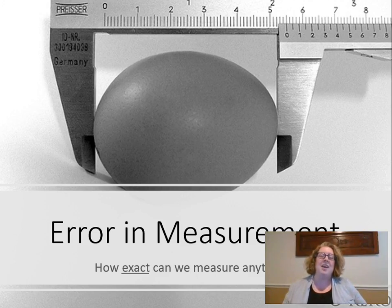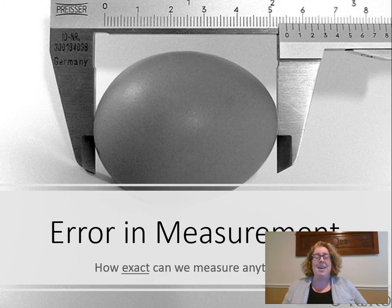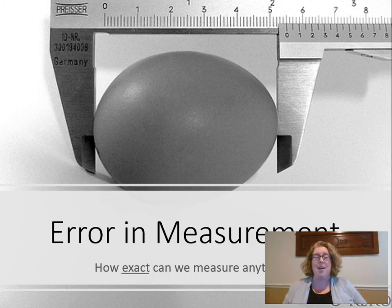Error in measurement. So think back to your science class — how exact can we measure anything? Remember that all measurement is an approximation. So if we look at this picture, on the ruler, we're measuring that egg, but we can only estimate in the tenths of an inch. It's somewhere between three and four tenths of an inch. So this goes doubly so for assessments in education. When we get a score on a test, there's some error in measurement. We're only getting an approximate measure of a student's achievement or aptitude. All of the measurements we use have some sort of error, so it's important that we keep in mind that nothing is exact.